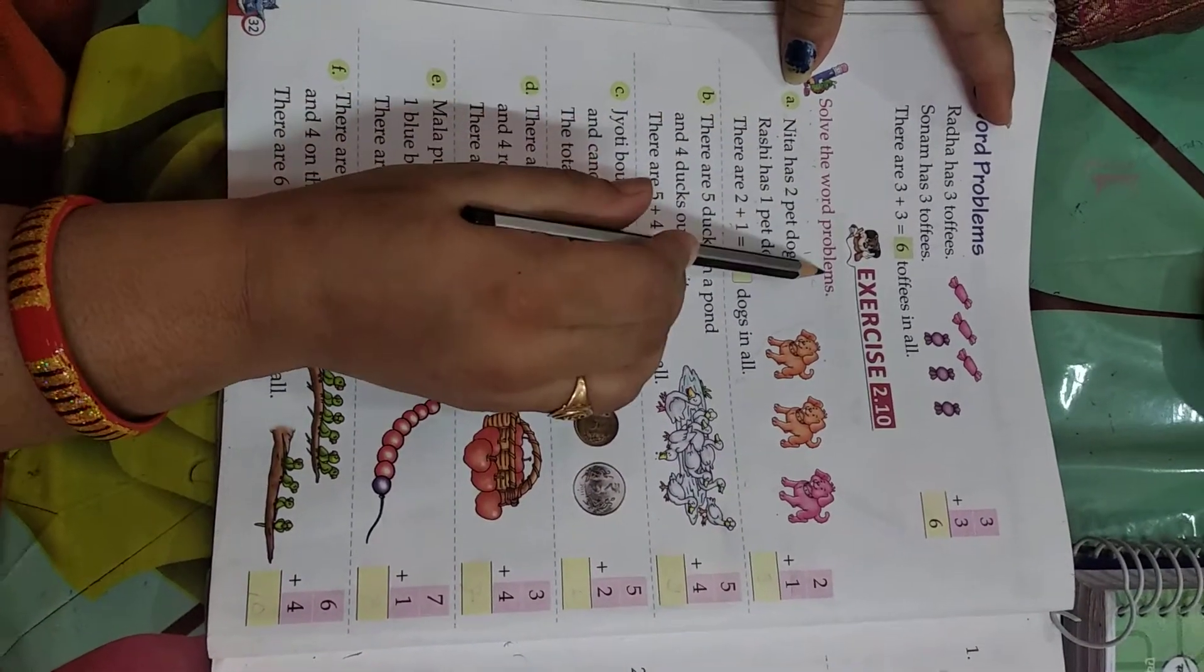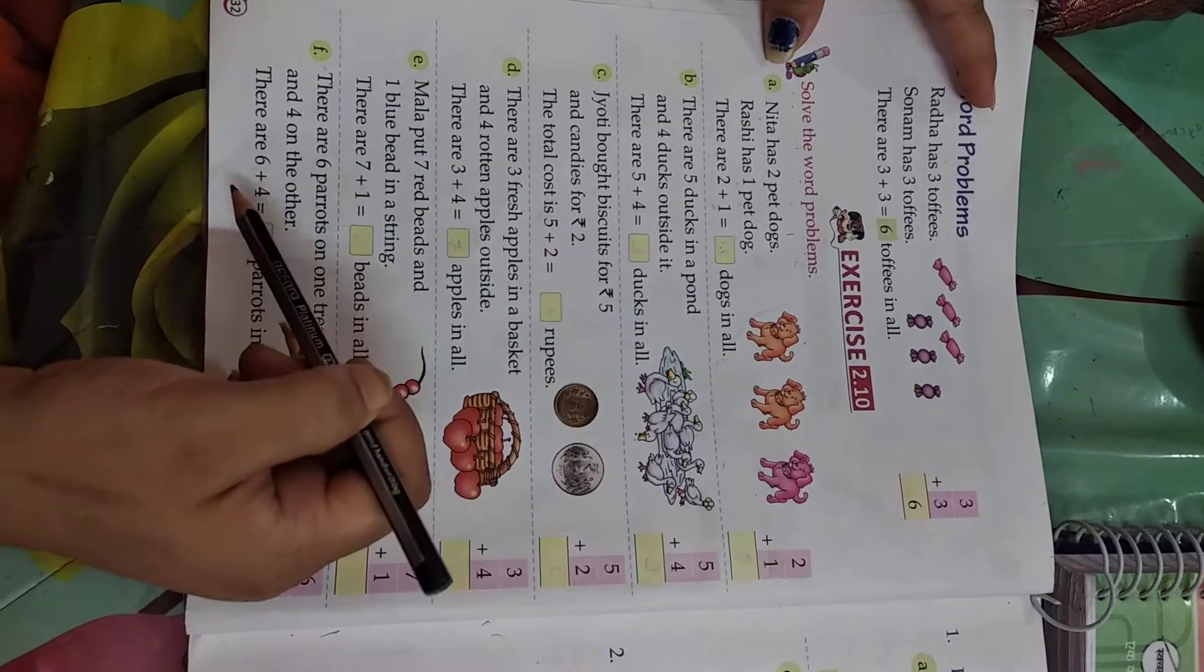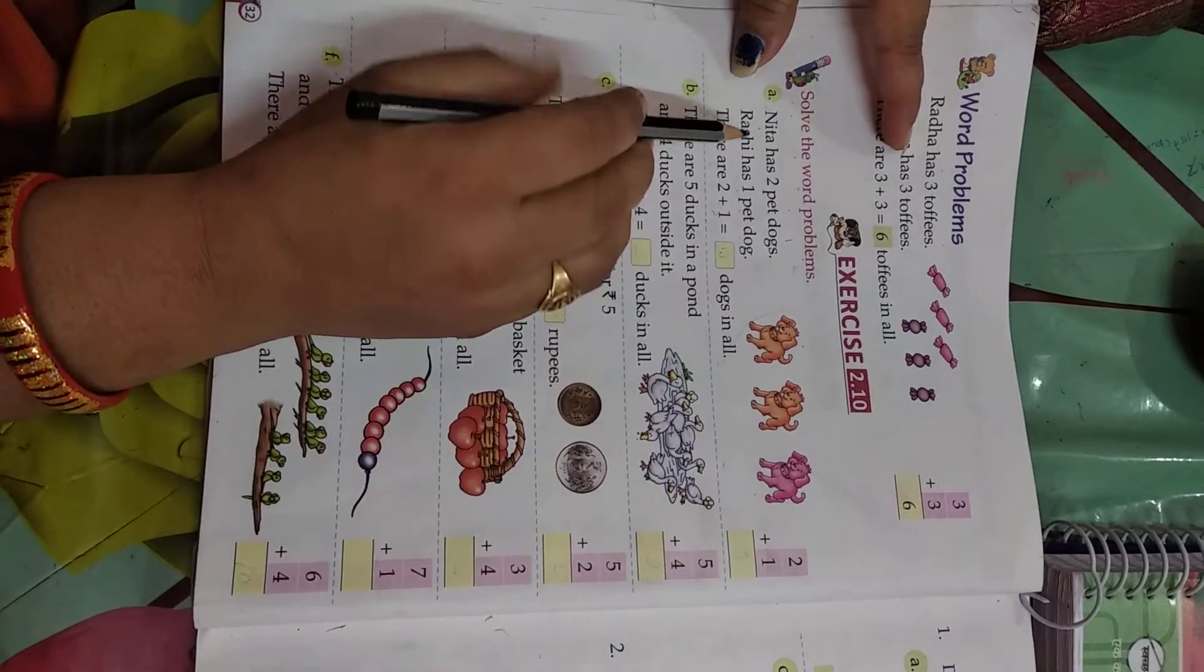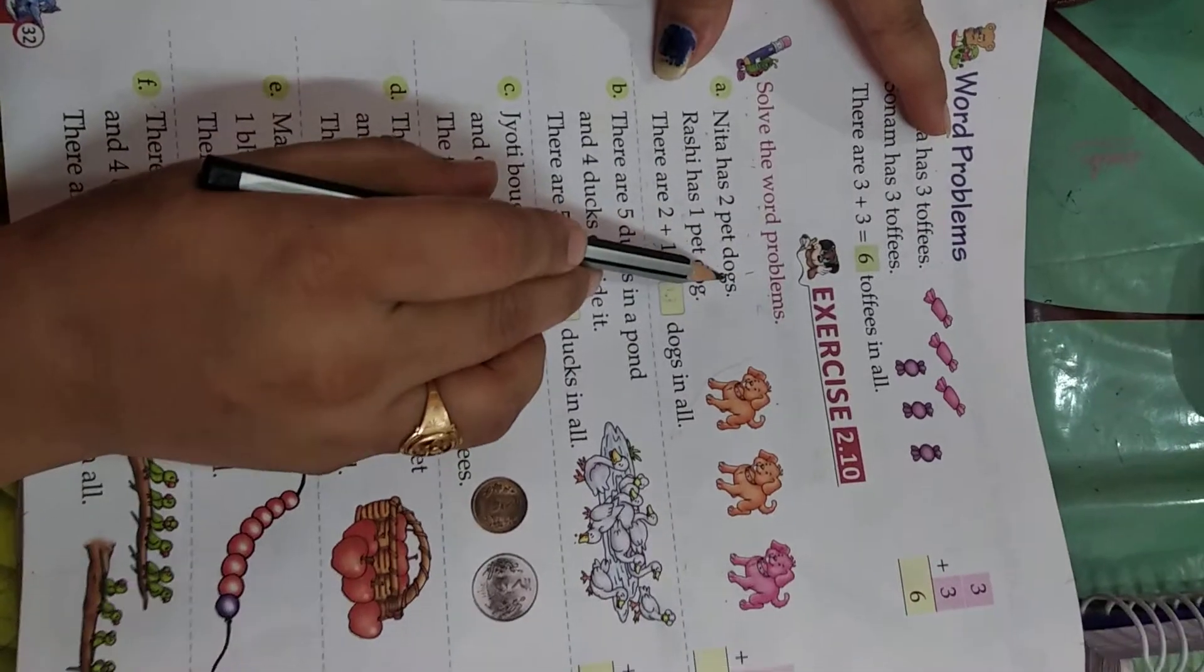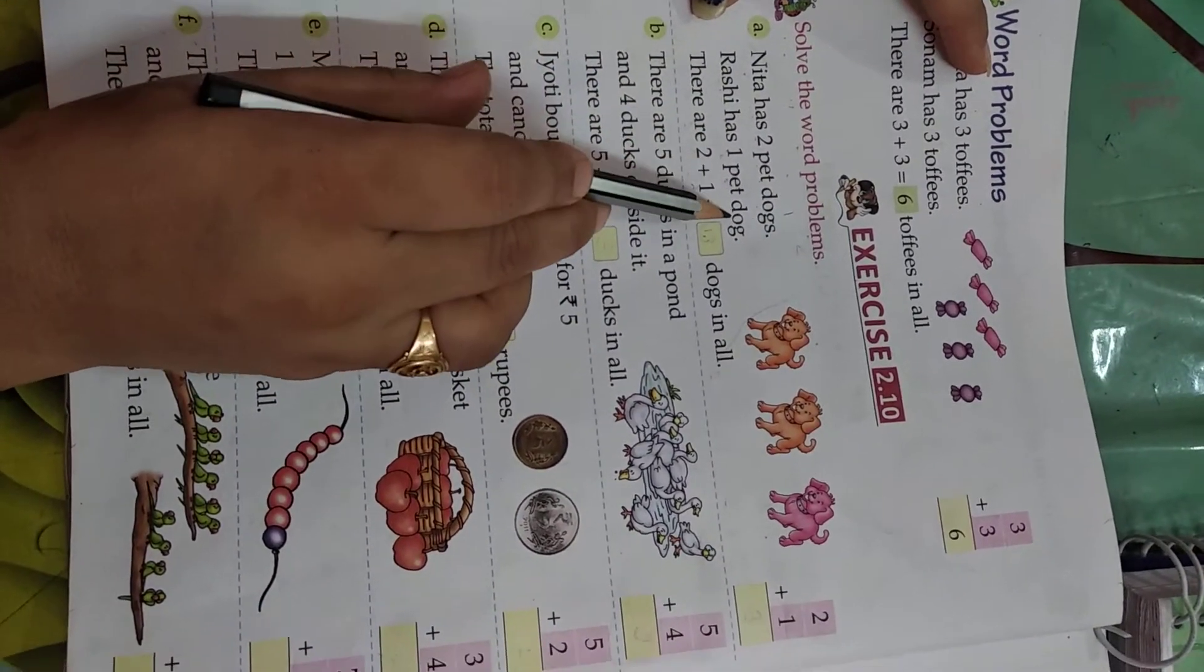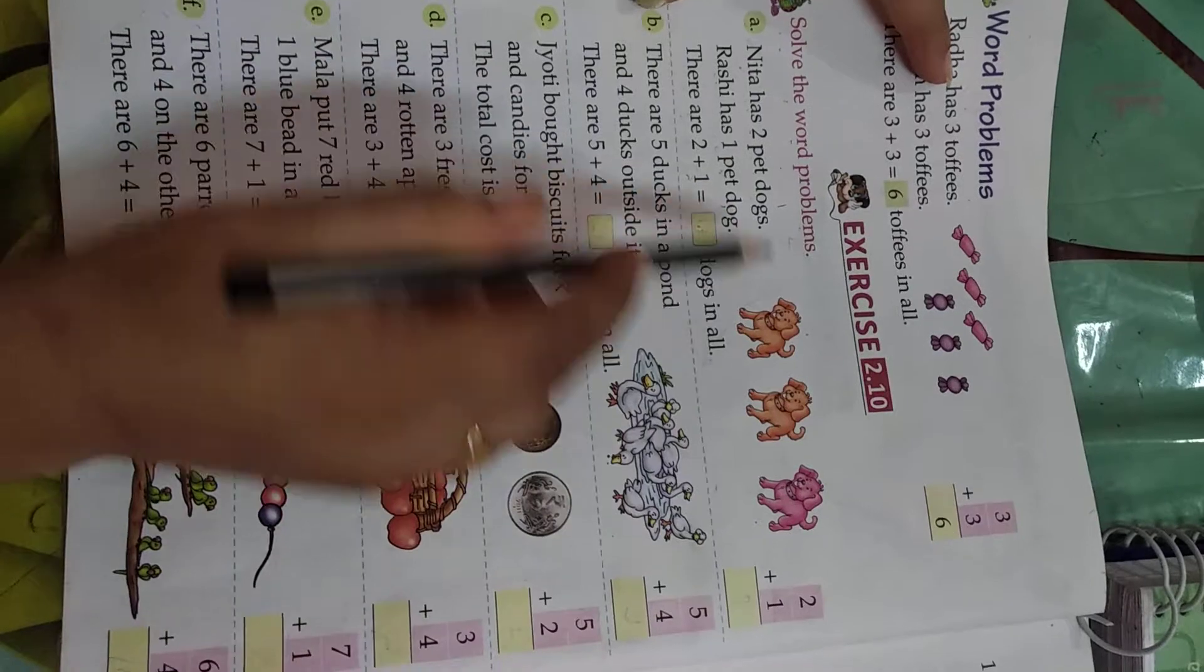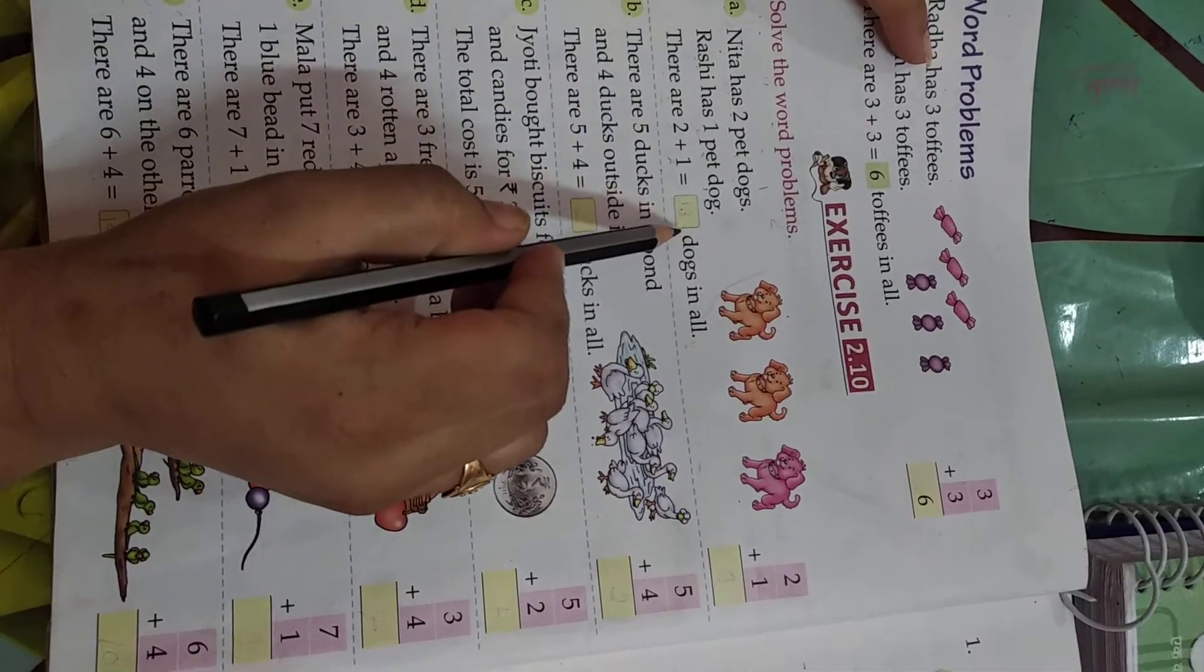Solve the word problems. There are some word problems and we have to solve them. First is Neeta has two pet dogs. Rashi has one pet dog. How many dogs are there?